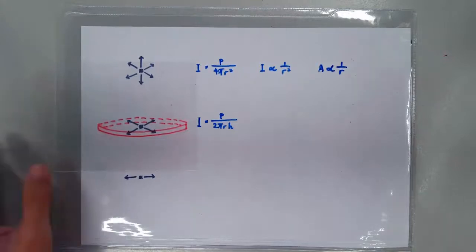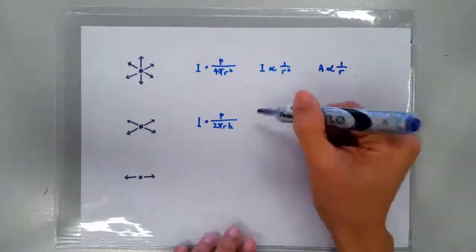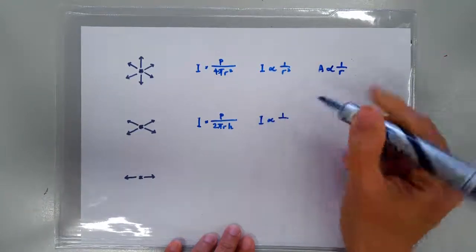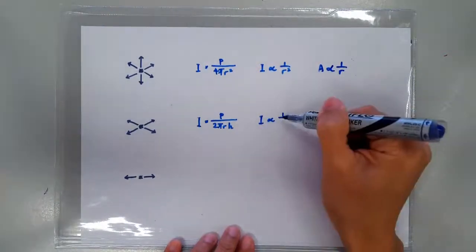So you can see quite clearly that for a 2D wave source, the intensity is proportional to 1 over r.